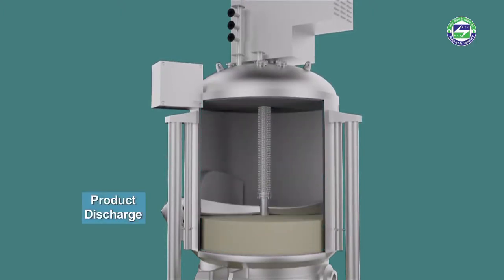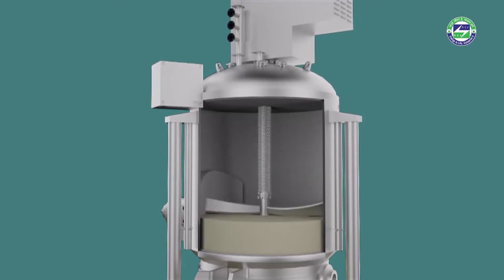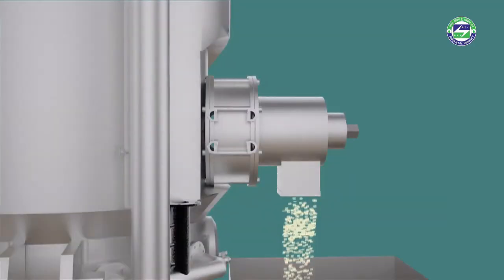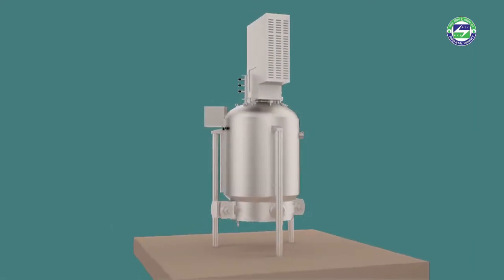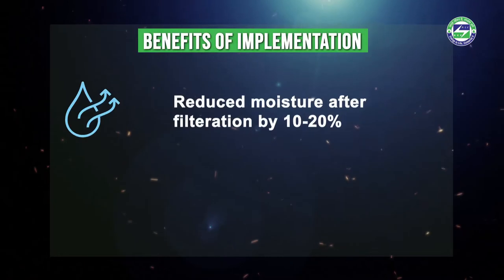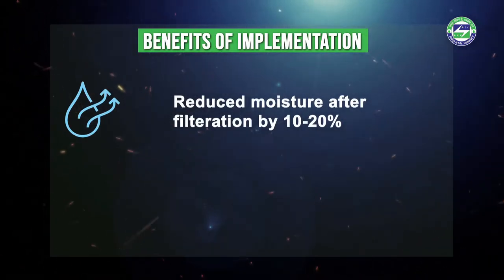During product discharge, the stirrer blades are rotated and lowered to cut away the upper surface of the filter cake. As the blades descend into the cake mass, the discharge valve is opened and a controlled discharge of the cake is achieved. The filtration process leaves 10 to 20 percent less moisture than conventional filtration methods.